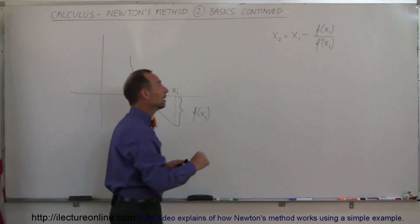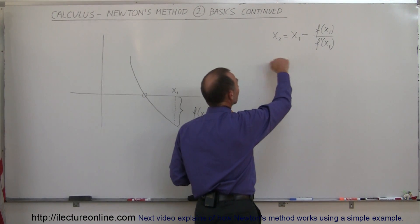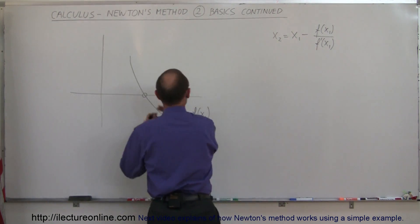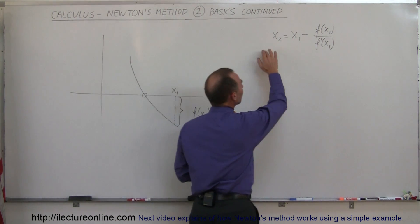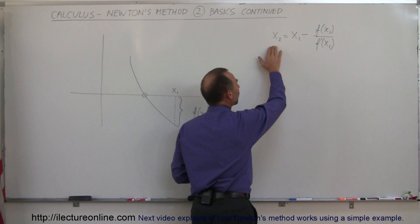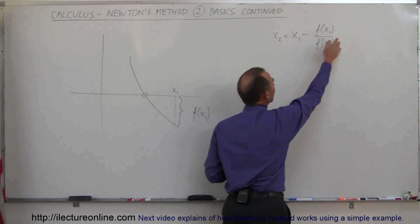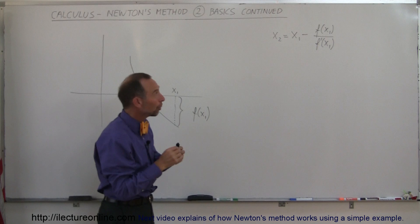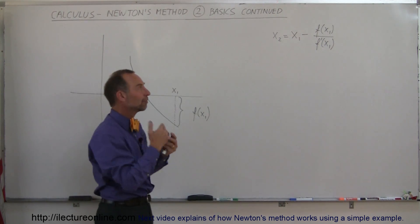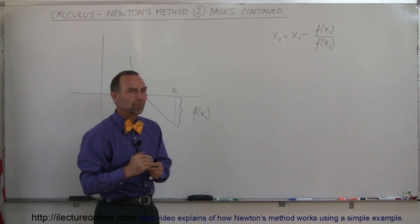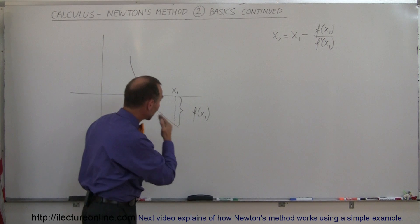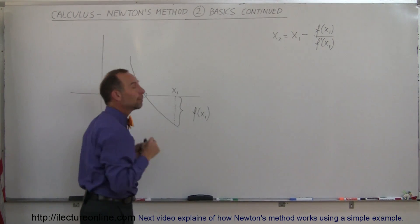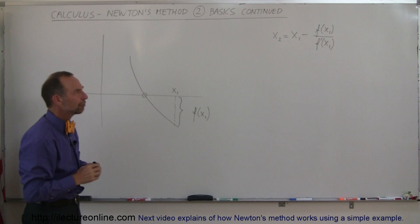Remember from the last video that we can iteratively find subsequent points closer and closer to the root by using this equation right here — that your new point is equal to the old point minus the ratio of the function evaluated at your first guess point divided by the derivative of the function evaluated at the first guess point. We showed you that works when the point you choose causes you to be above the x-axis when you evaluate the function.